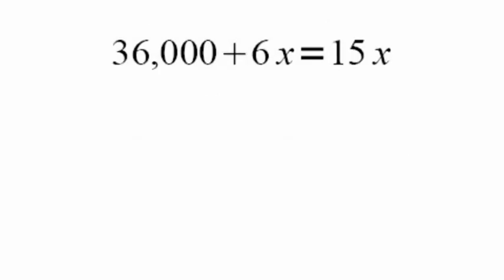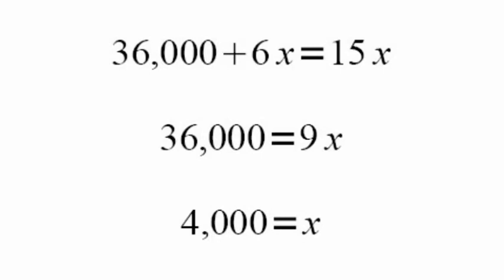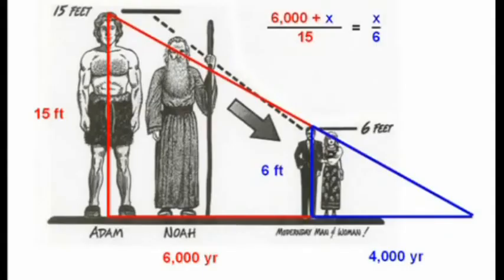Now subtract 6X from both sides to get 36,000 is equal to 9X. Finally, divide both sides by 9 to get 4,000 is equal to X. This tells us that in 4,000 years, mankind will shrink to nothing.